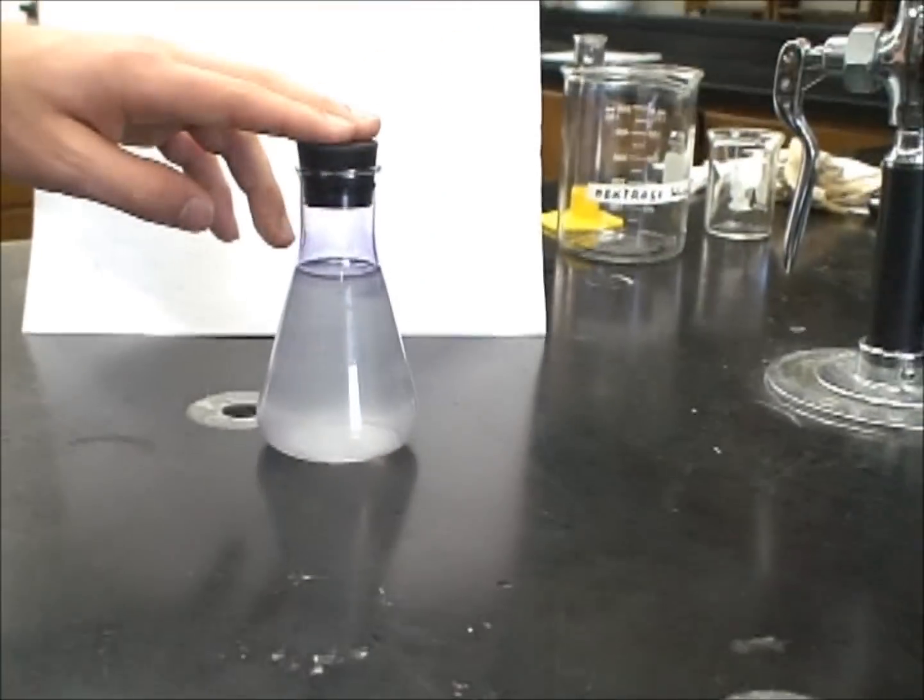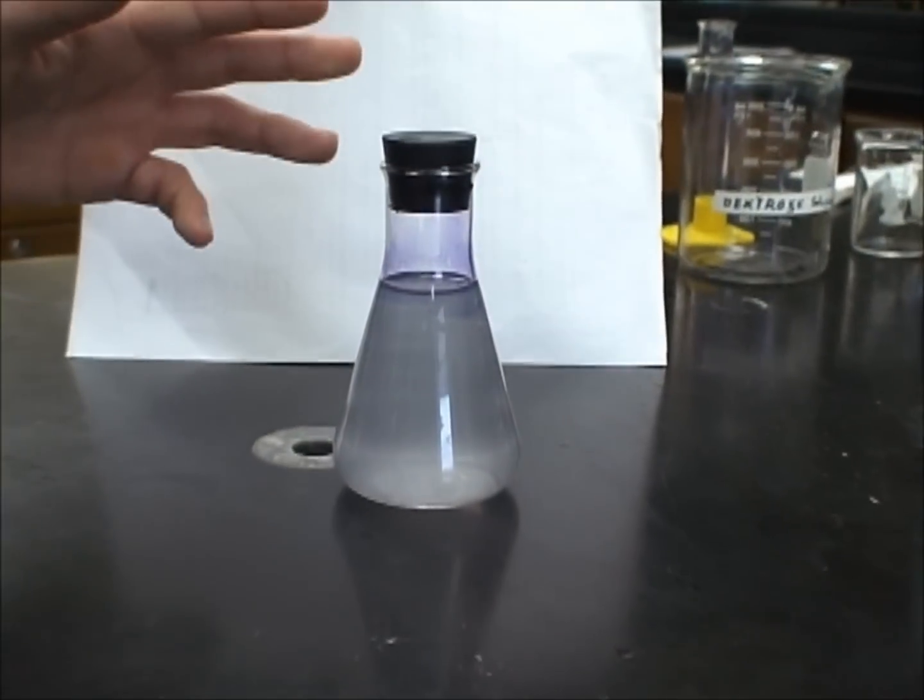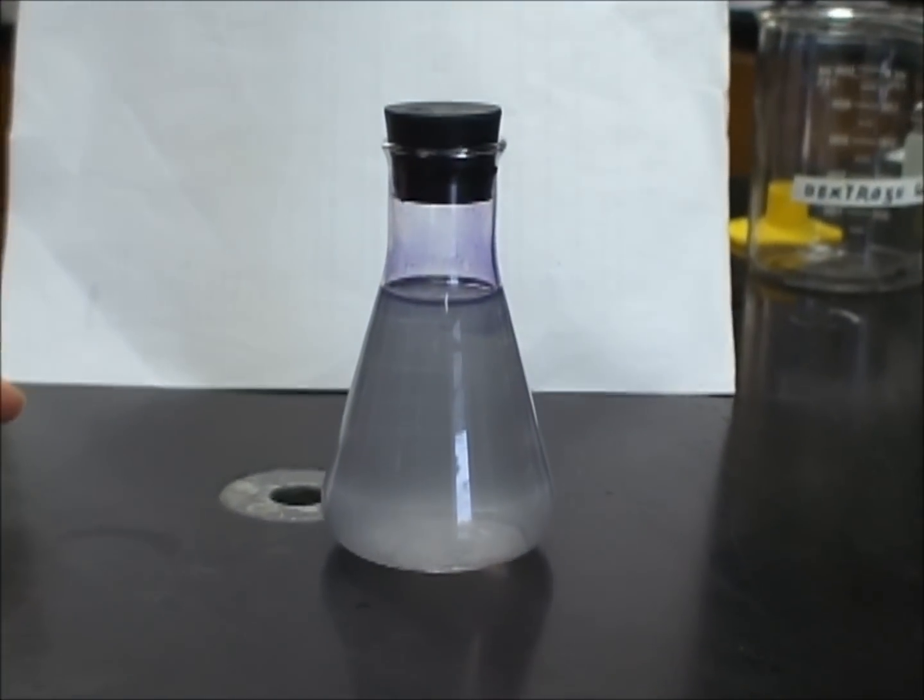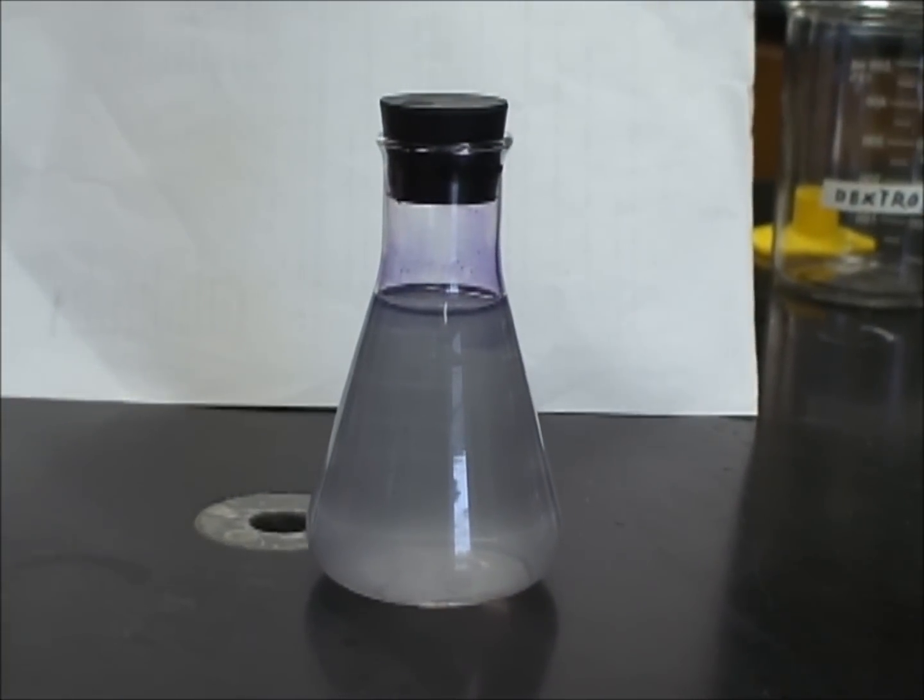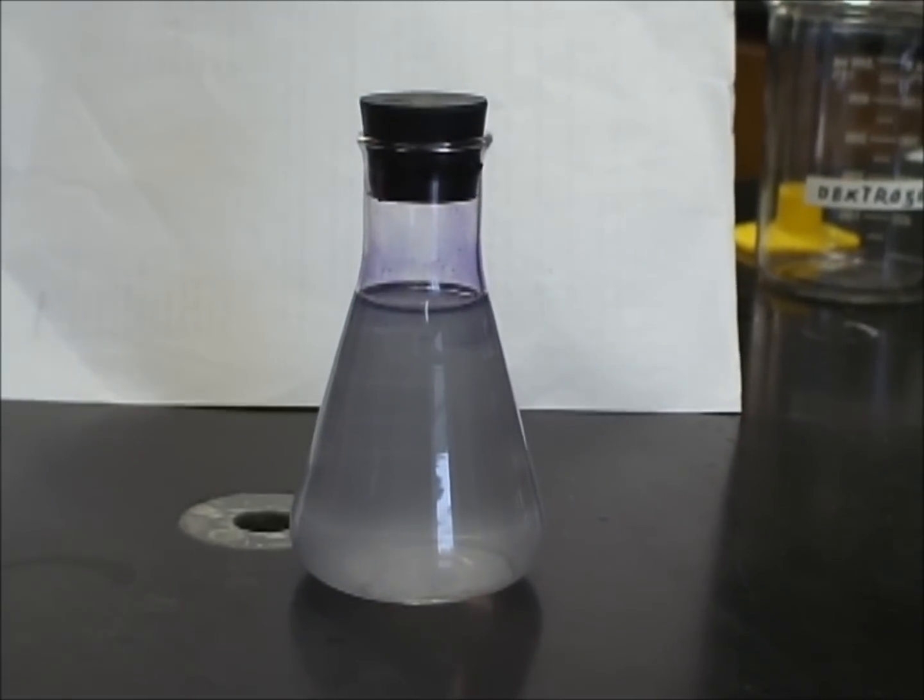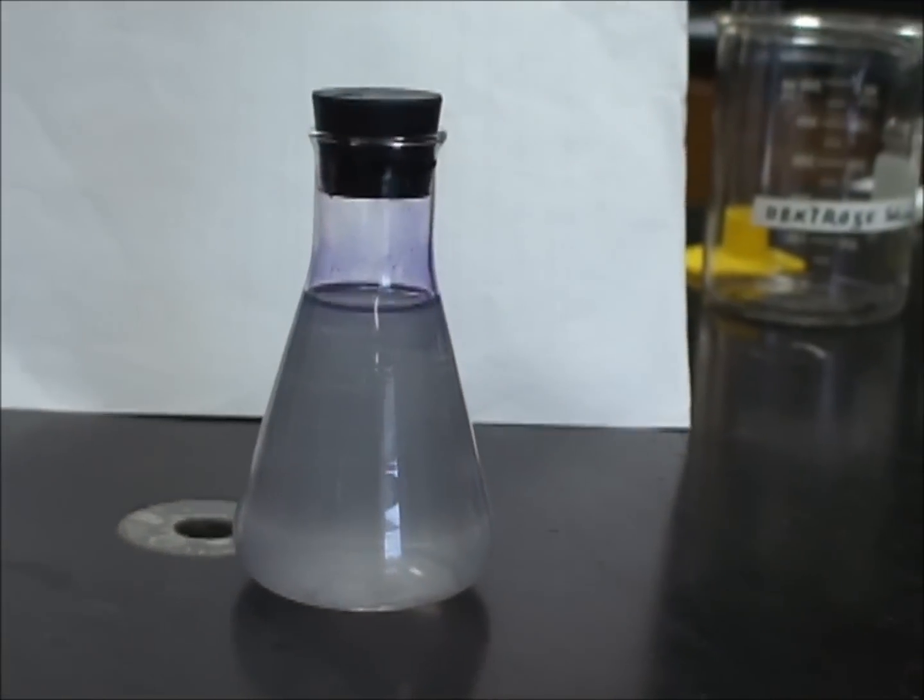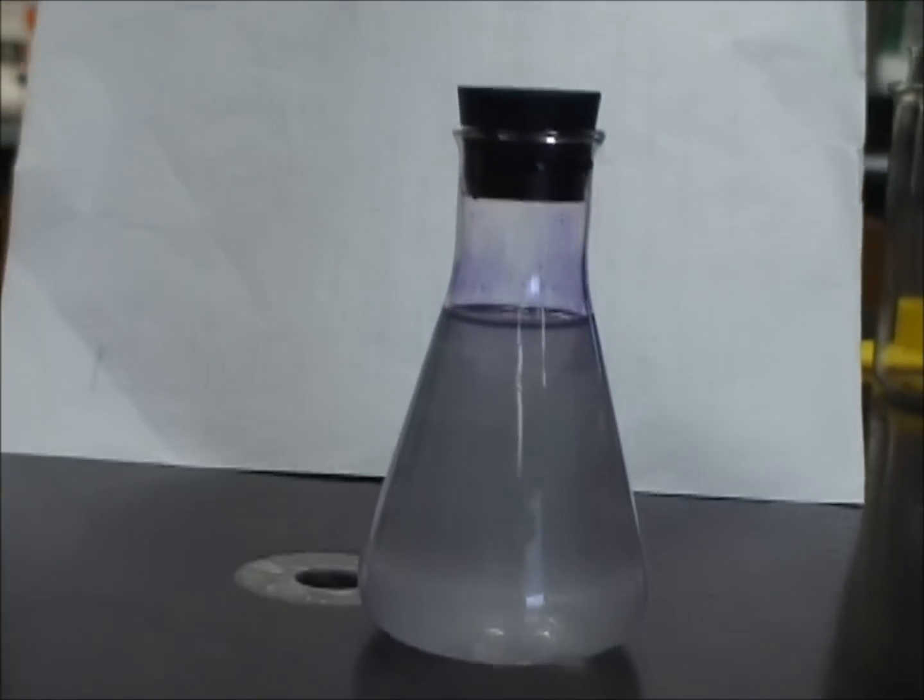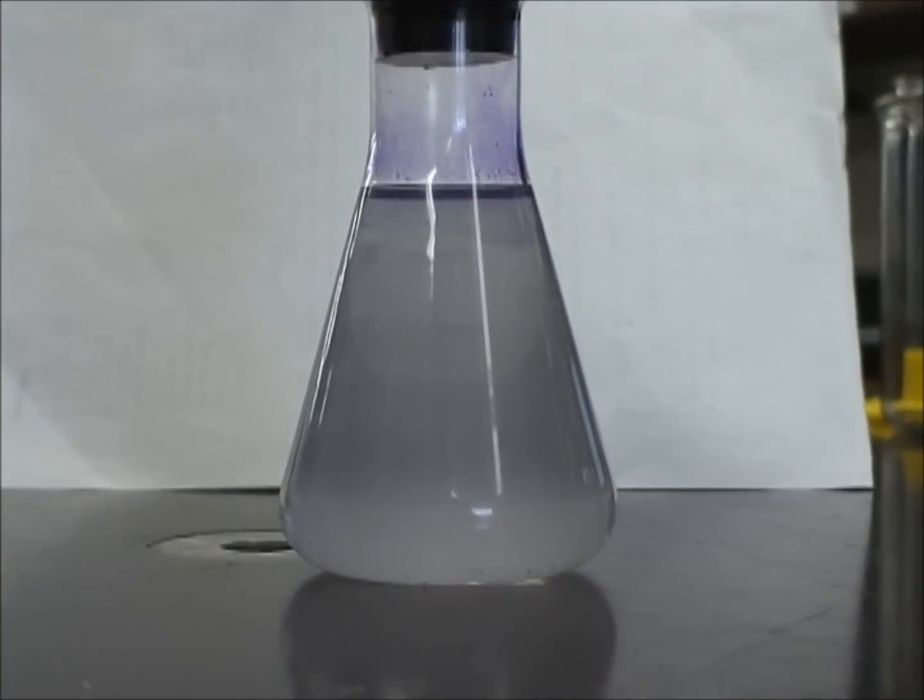So, in this beaker, we have three things. There's dextrose, which is just a fancy form of glucose, so it's C6H12O6. There's NaOH, which is a very strong base, and there's methylene blue, which is a dye.